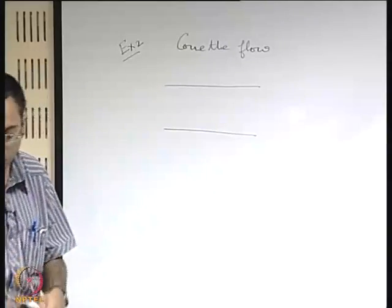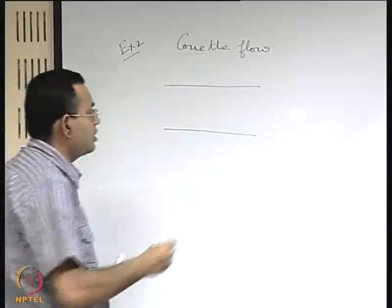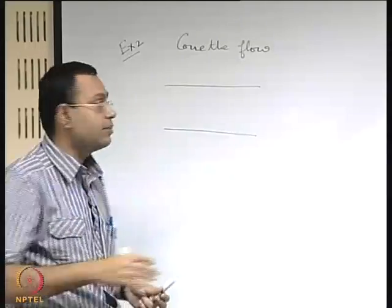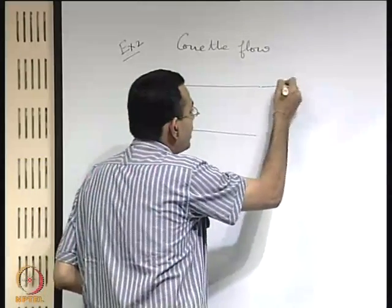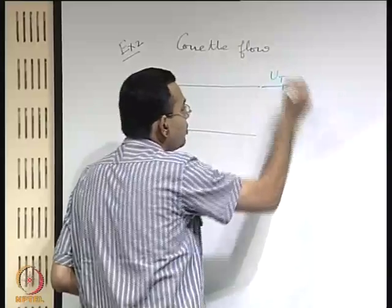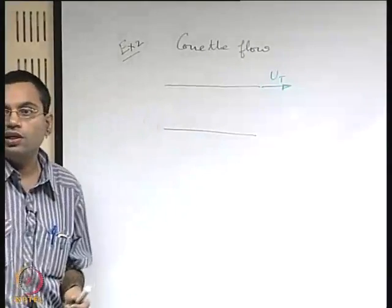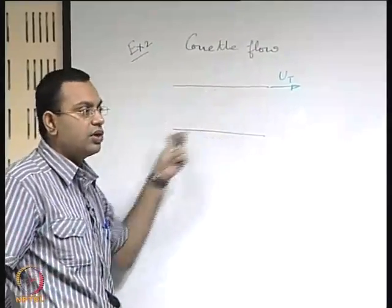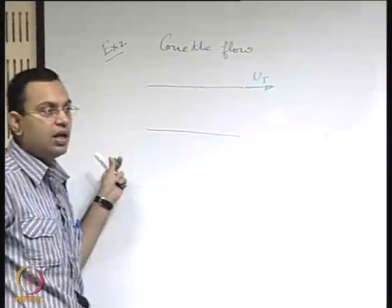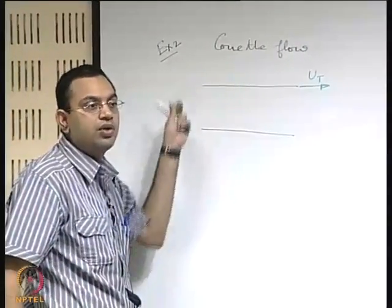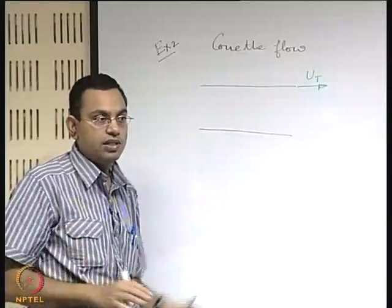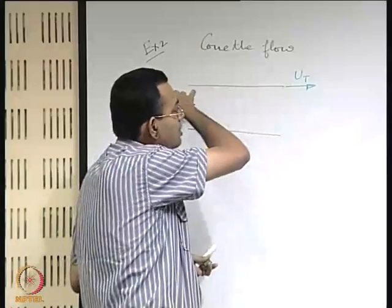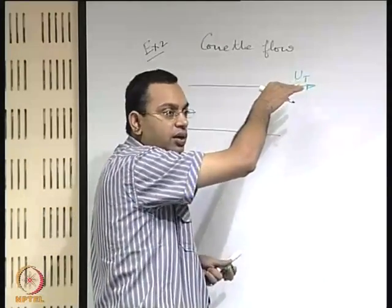In Couette flow, there is a modification: the plates are not stationary — one plate is moving relative to the other. For example, the top plate is moving with a velocity u_t relative to the bottom plate. It is not always necessary that the top plate moves; what matters is that there is a relative velocity between the two plates.